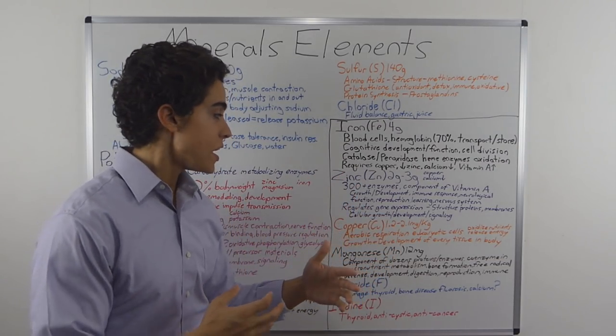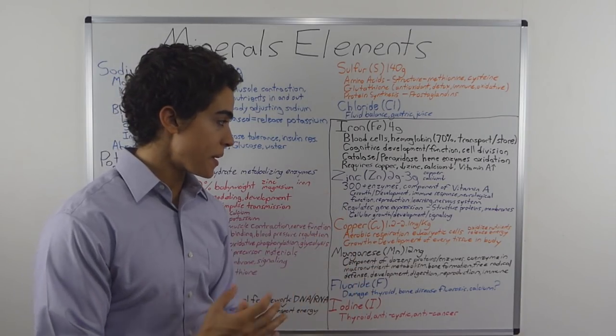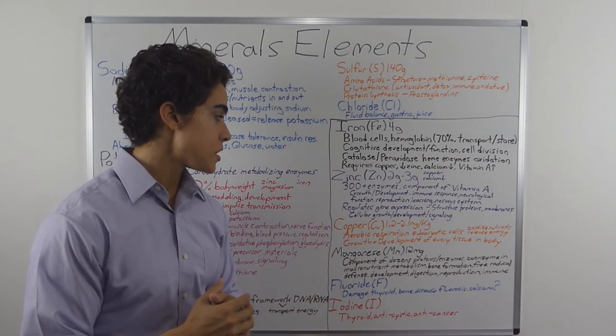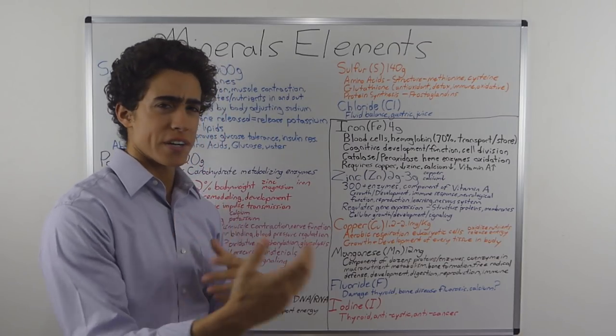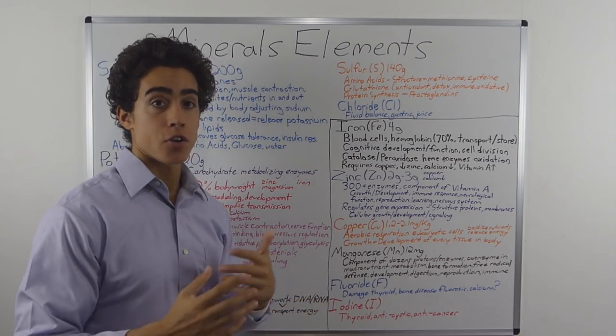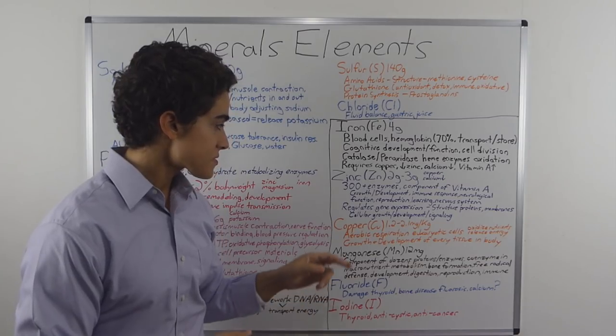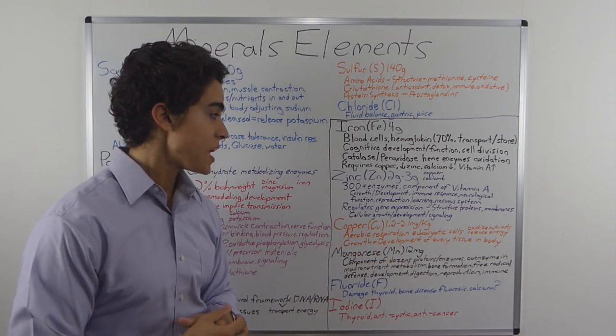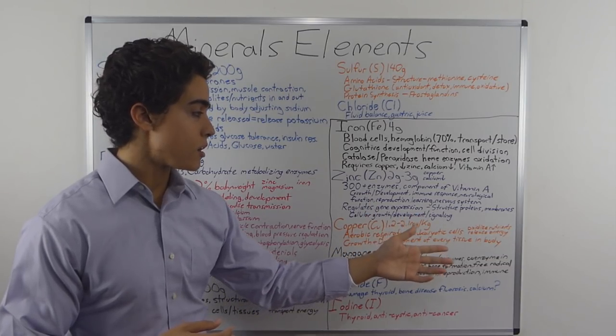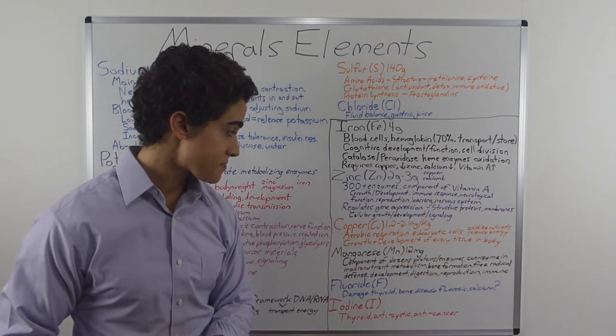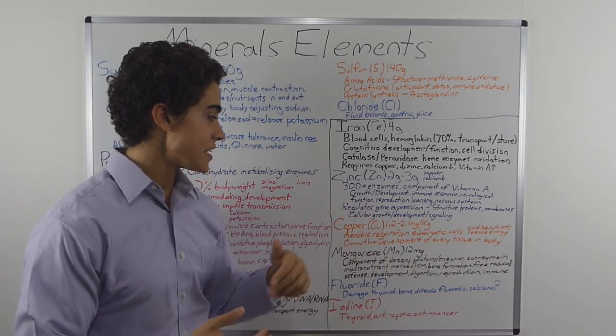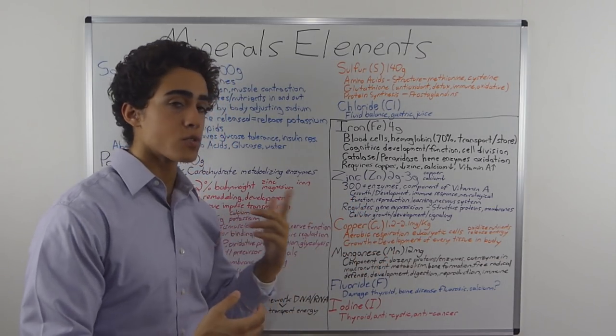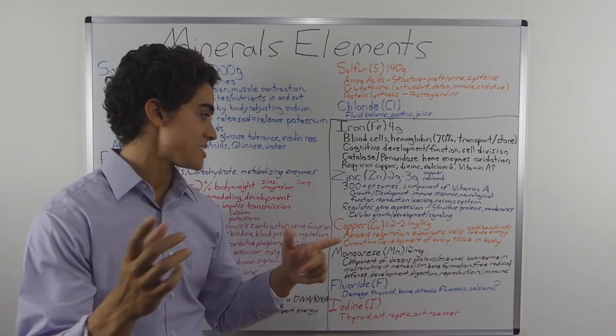These enzymes entail growth and development, immune response, neurological function, reproduction, learning ability, as well as certain nervous system activities. Zinc actually directly regulates gene expression. It is also a component of the structures of the proteins and the membranes. And this means that zinc is involved in cellular growth, development, and signaling.